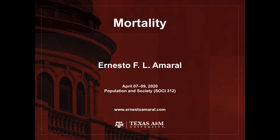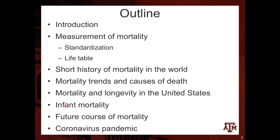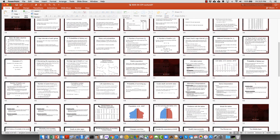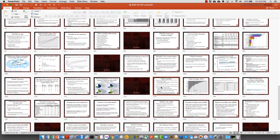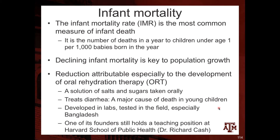I will continue on the chapter about mortality, and the next topic is infant mortality. The infant mortality rate is the most important measure of infant death. It is estimated by taking the number of deaths in a year of children under the age of one, dividing by the number of babies born in that same year in the same place — a country, state, or city — and multiplying by 1,000.